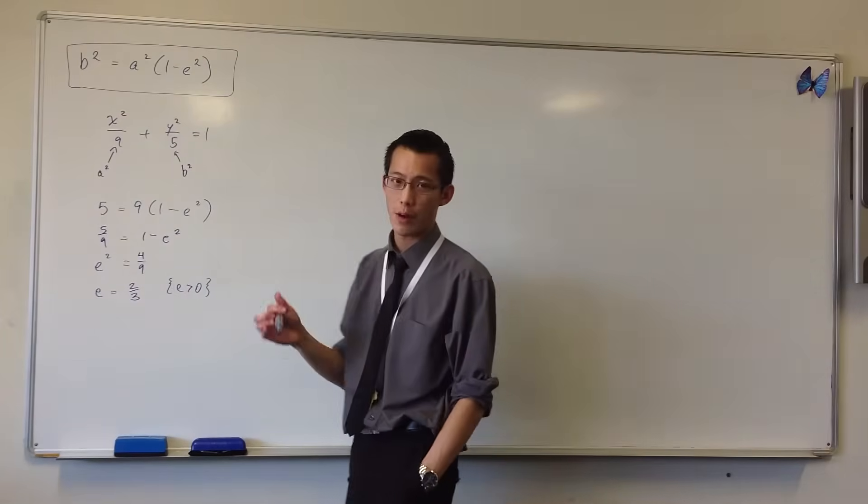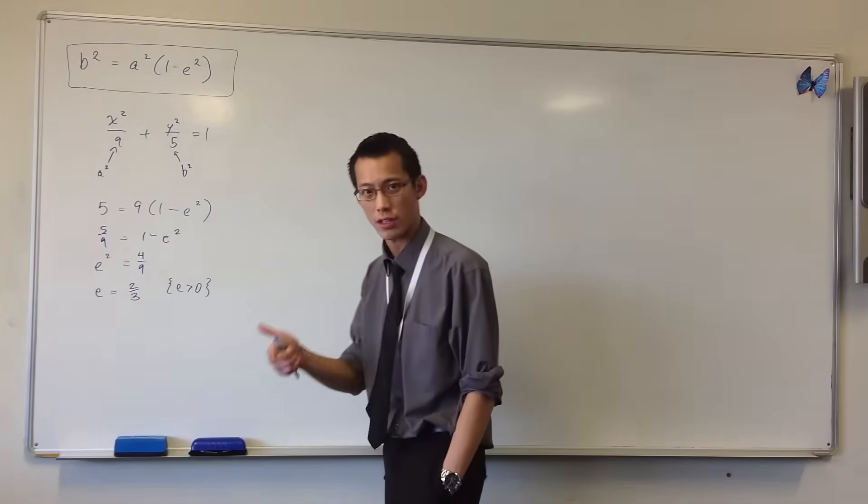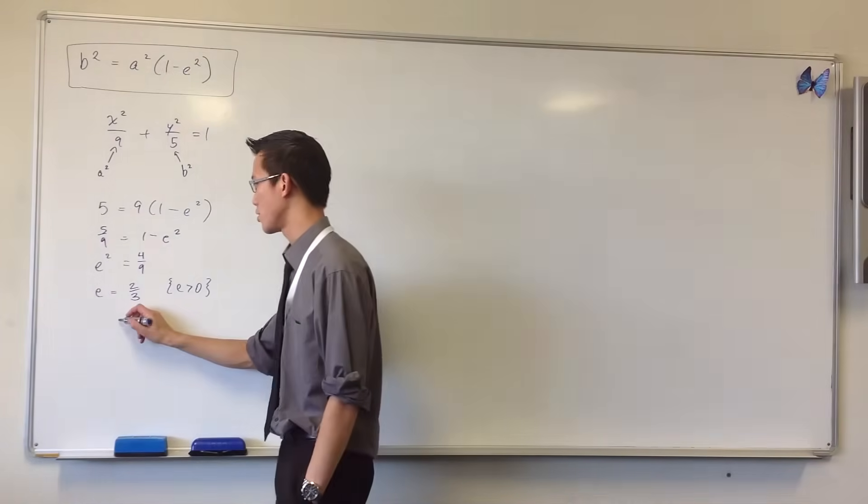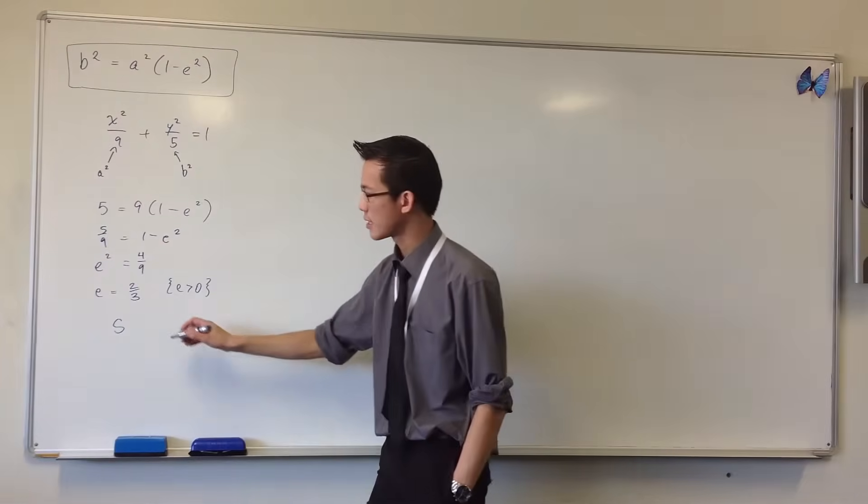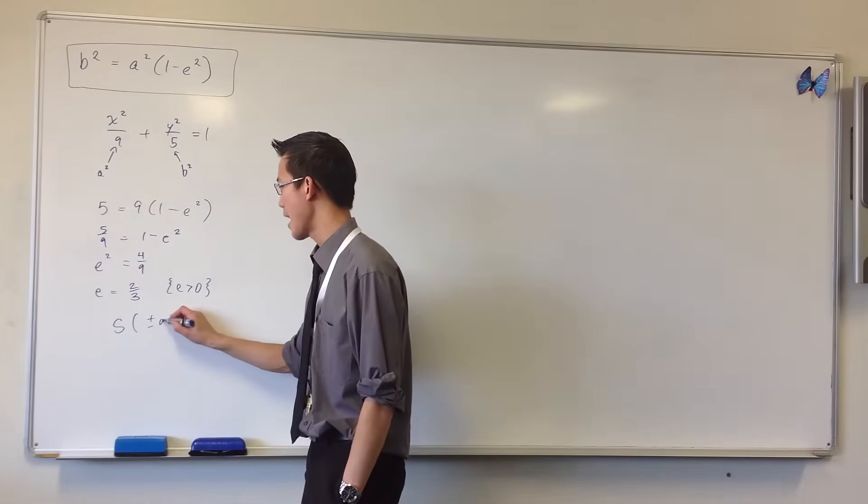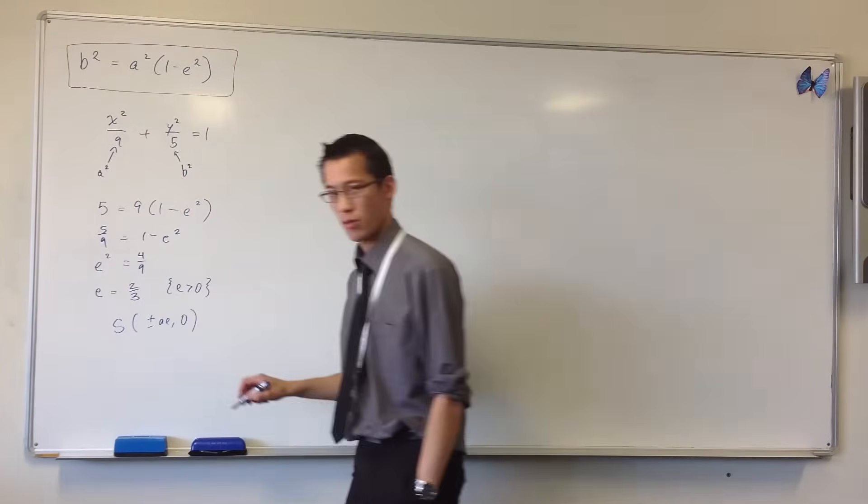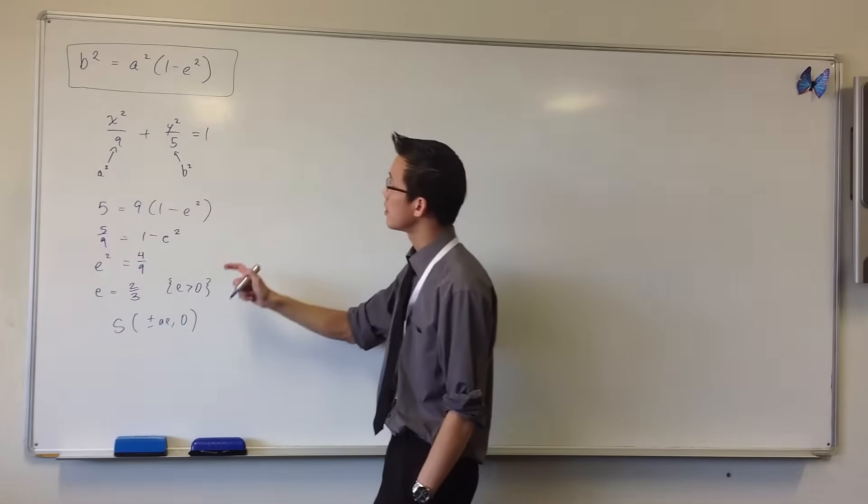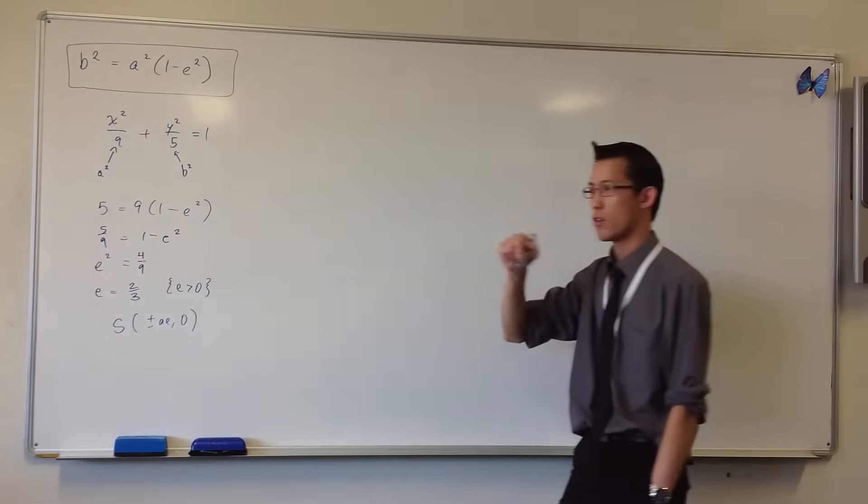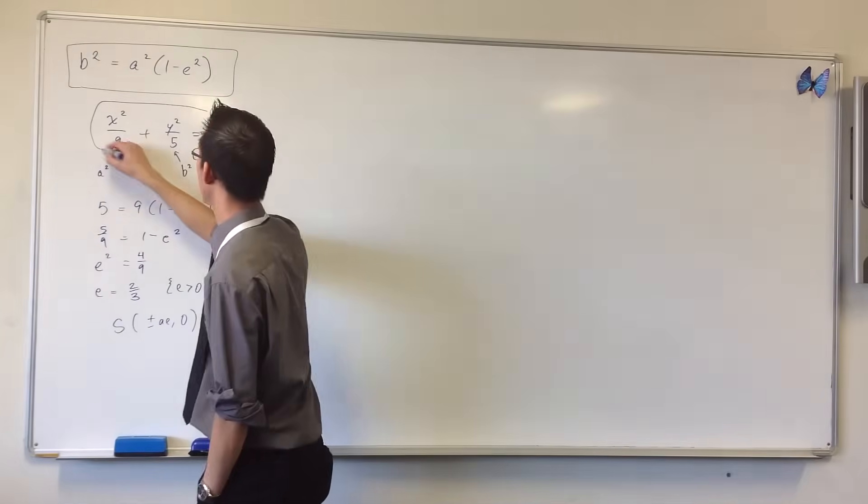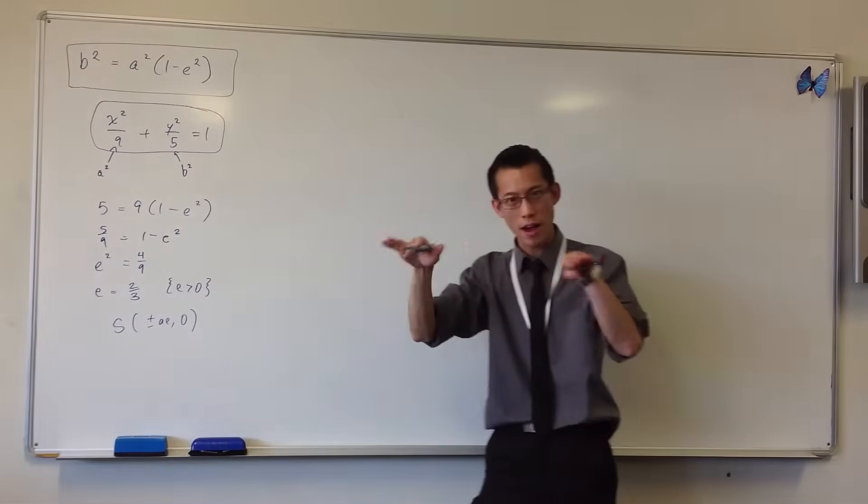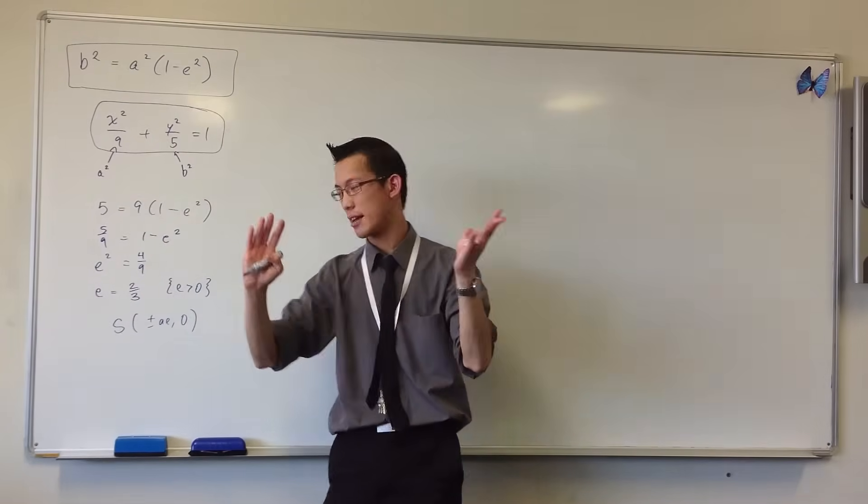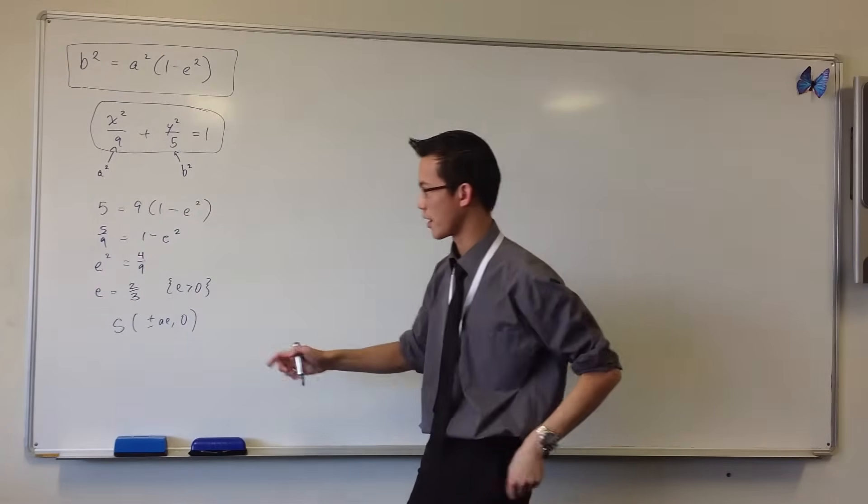Now how do I use this to work out where the foci and directrices are? Well, remember that we established that the focus was at plus or minus ae, comma zero. It's at zero because what you've got is an ellipse centered on the origin. It's plus or minus because of the symmetry you've got both sides there.